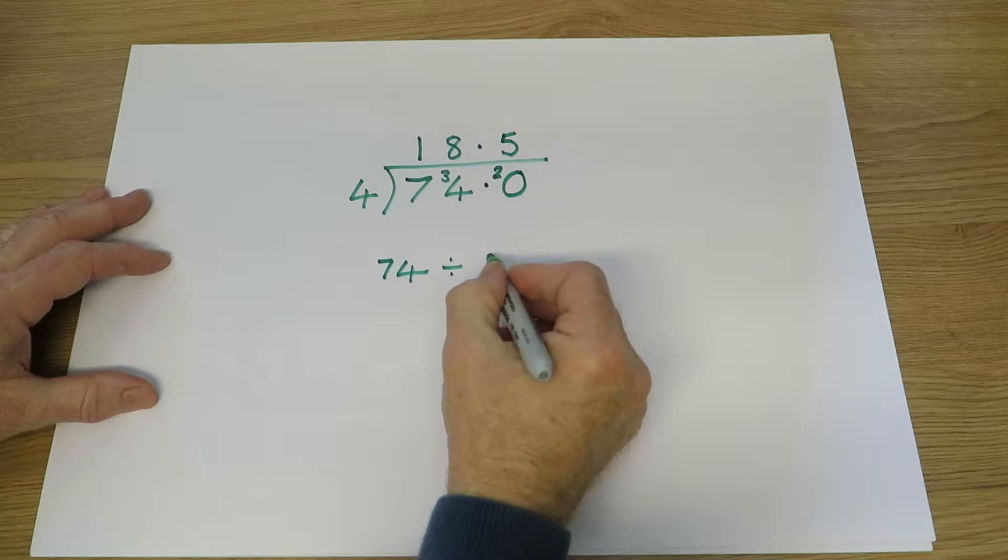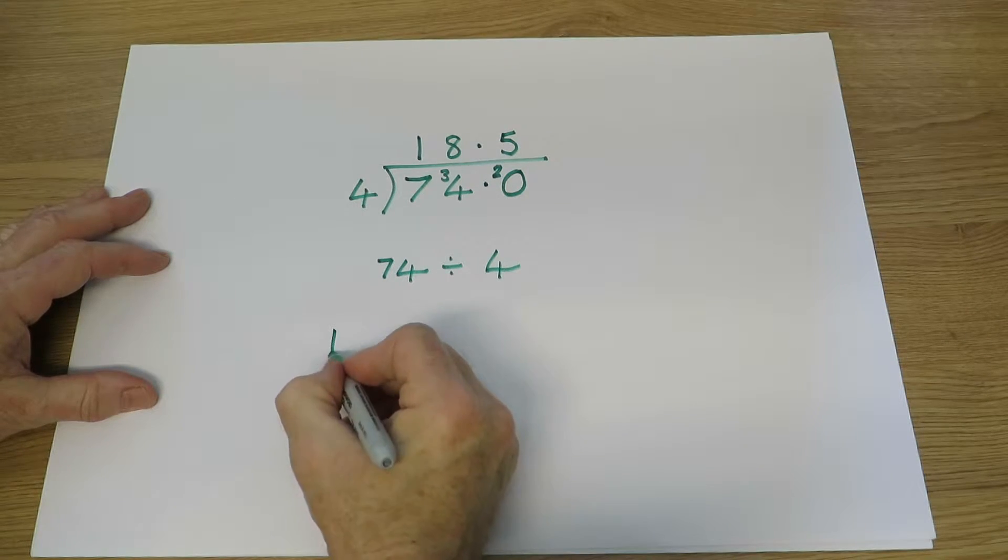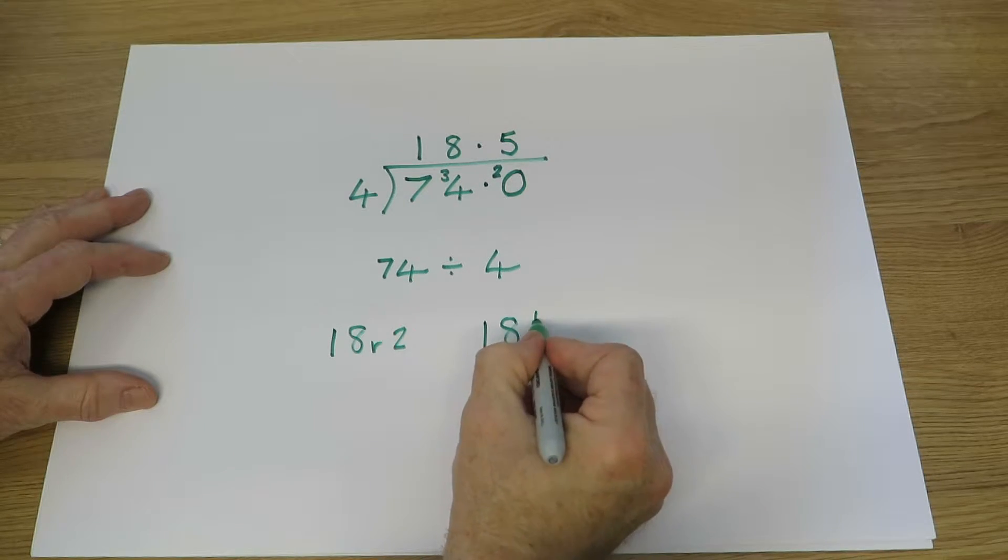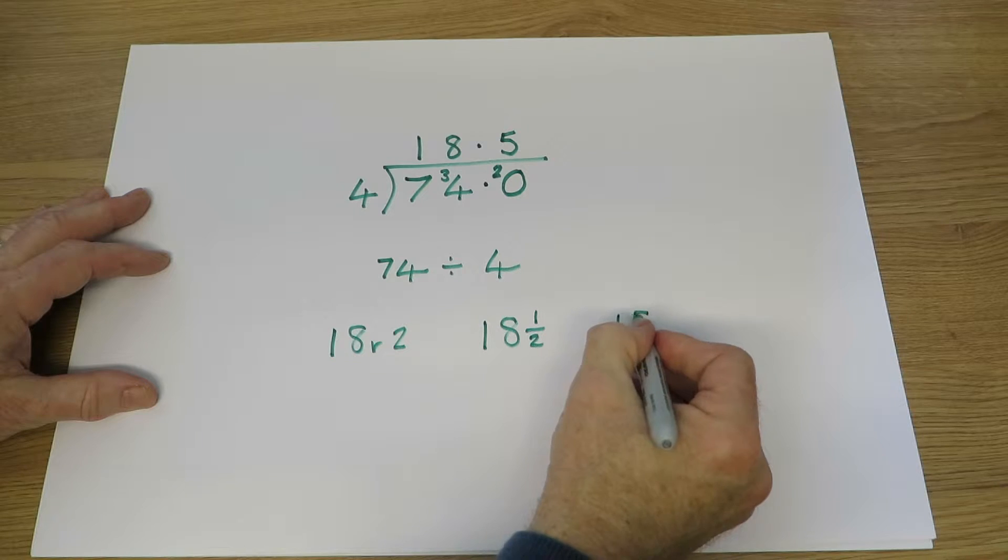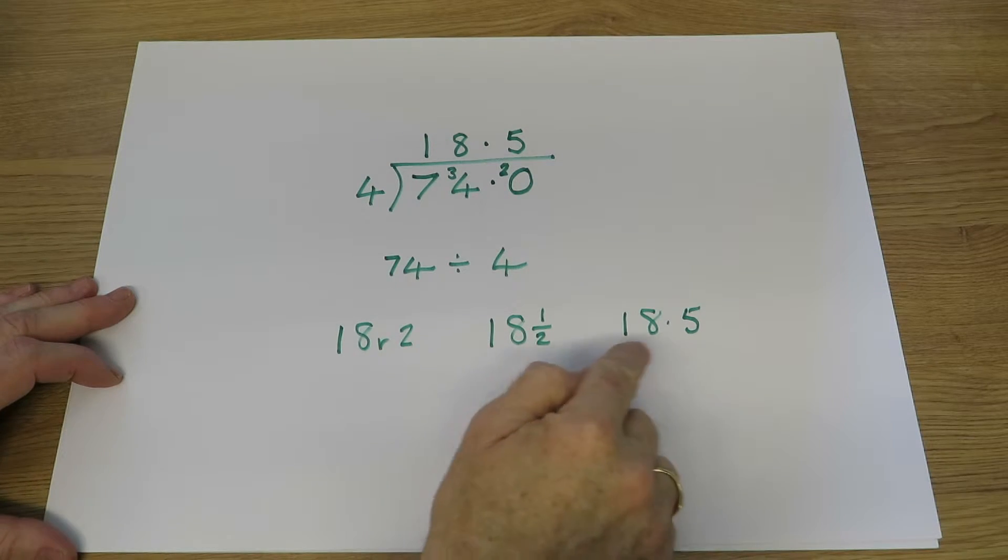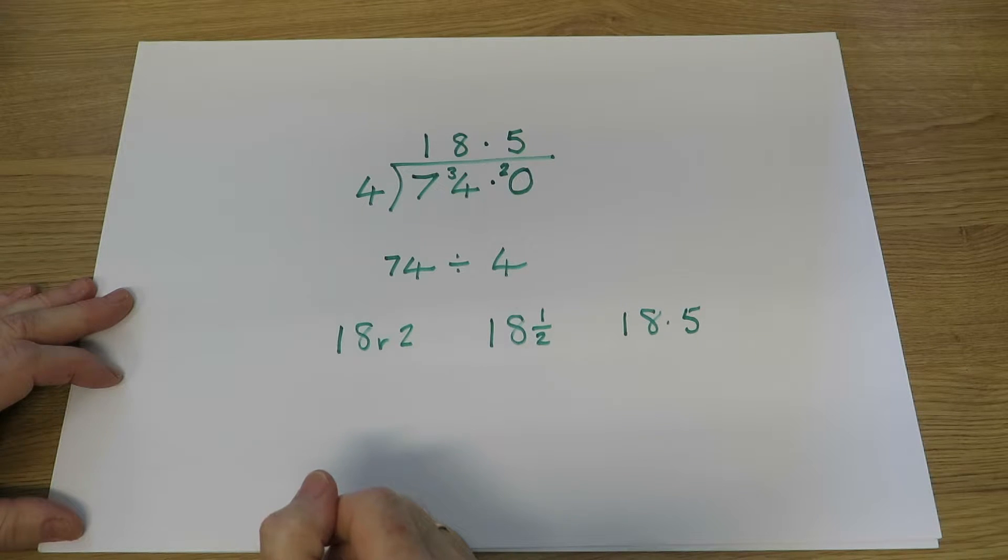74 divided by 4. We've seen 18 remainder 2, 18 and a half, and 18.5. The children need to decide which answer to give according to the problem they've been set.